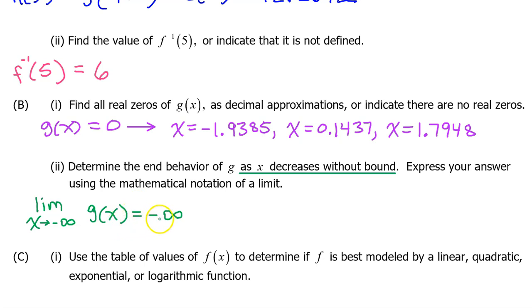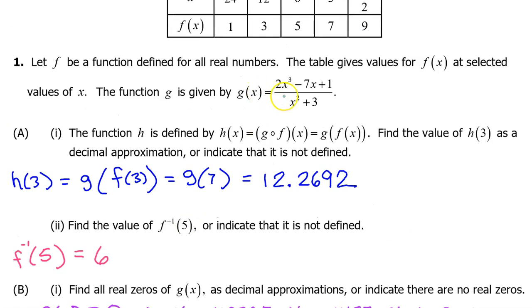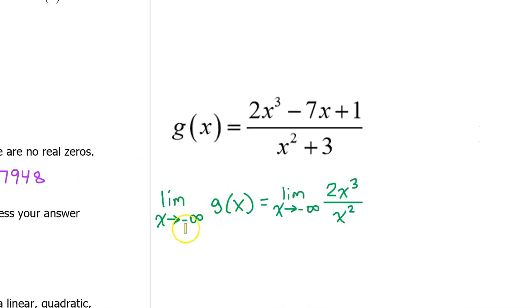Just for fun, let's see if we could come up with this answer just using the equation instead of the graph. As x approaches negative infinity, only the highest degree terms will affect this limit. So the limit as x approaches negative infinity of g of x will equal the limit as x approaches negative infinity of 2x to the third power over x squared. This simplifies and is equivalent to the limit as x approaches negative infinity of 2x.